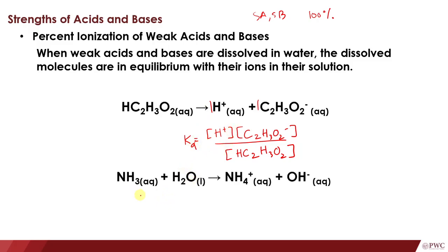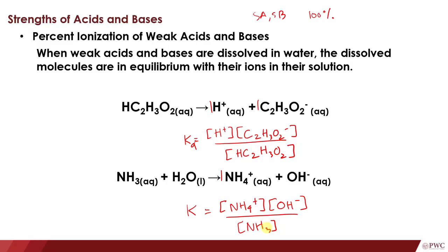We can also do the same thing for a base. We have ammonia reacting with water to form ammonium and then hydroxide ion. The equilibrium expression is: K equals the concentration of NH4+ raised to the power of 1, multiplied by the hydroxide ion, over the concentration of our reactant NH3 also raised to the power of 1. H2O is a pure liquid and is not included in the equilibrium expression. This equilibrium expression for a base gives us Kb — the base ionization constant.